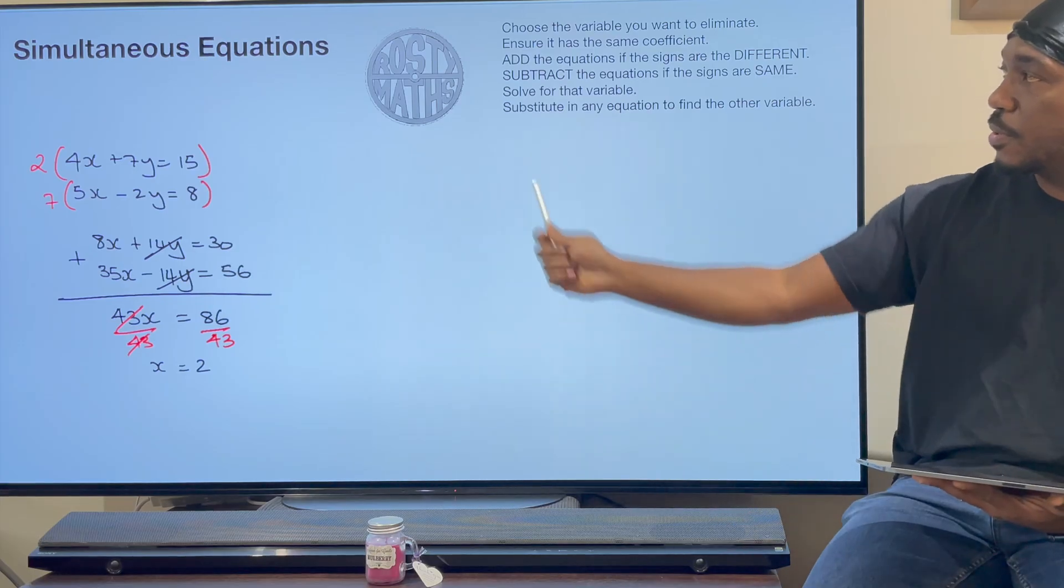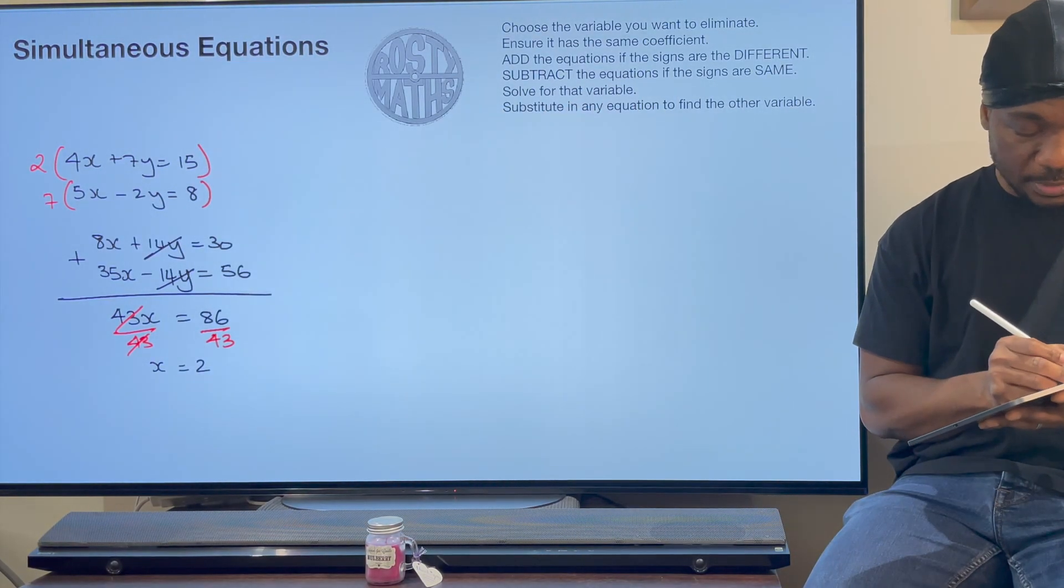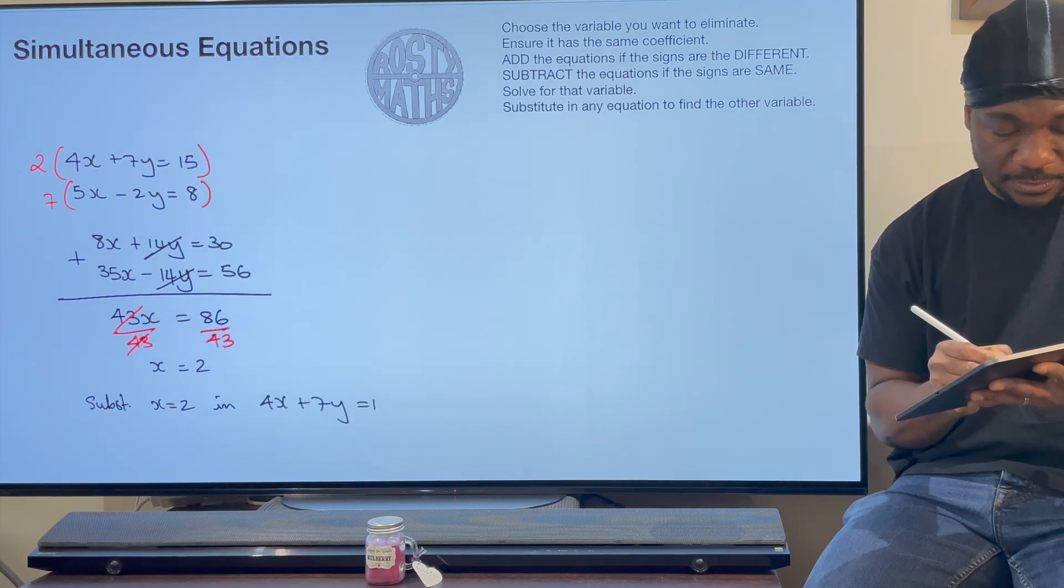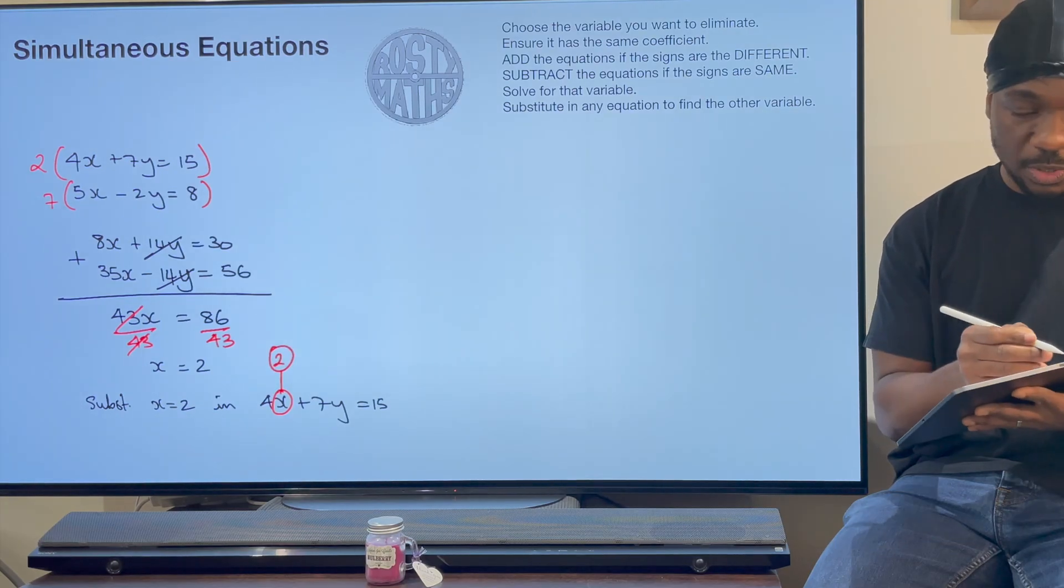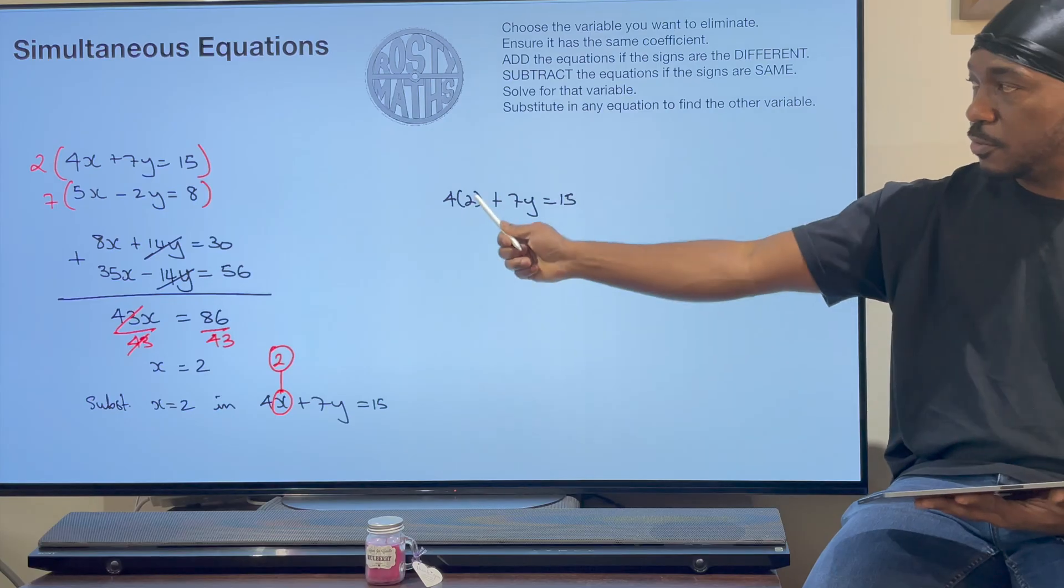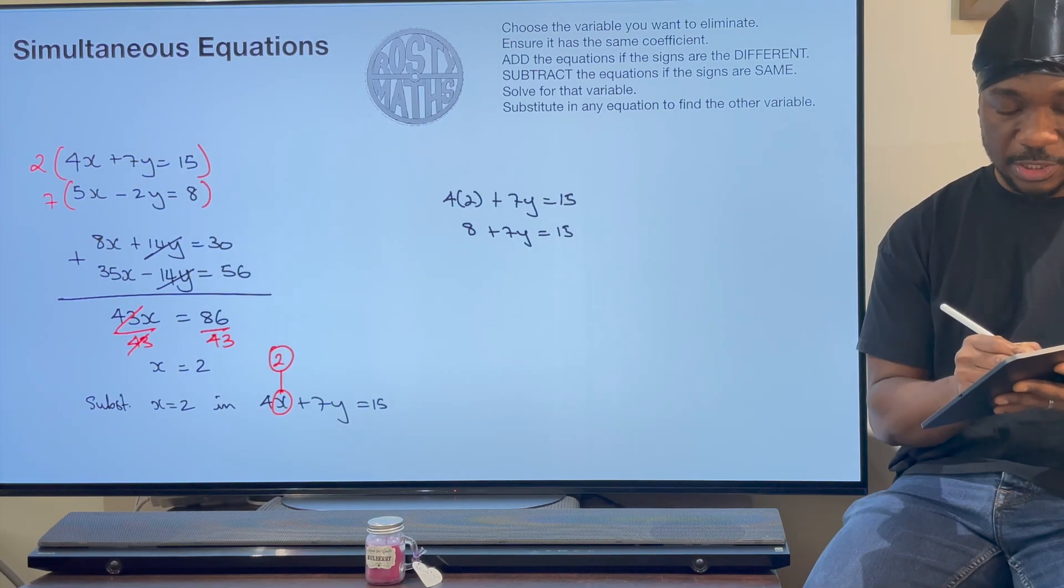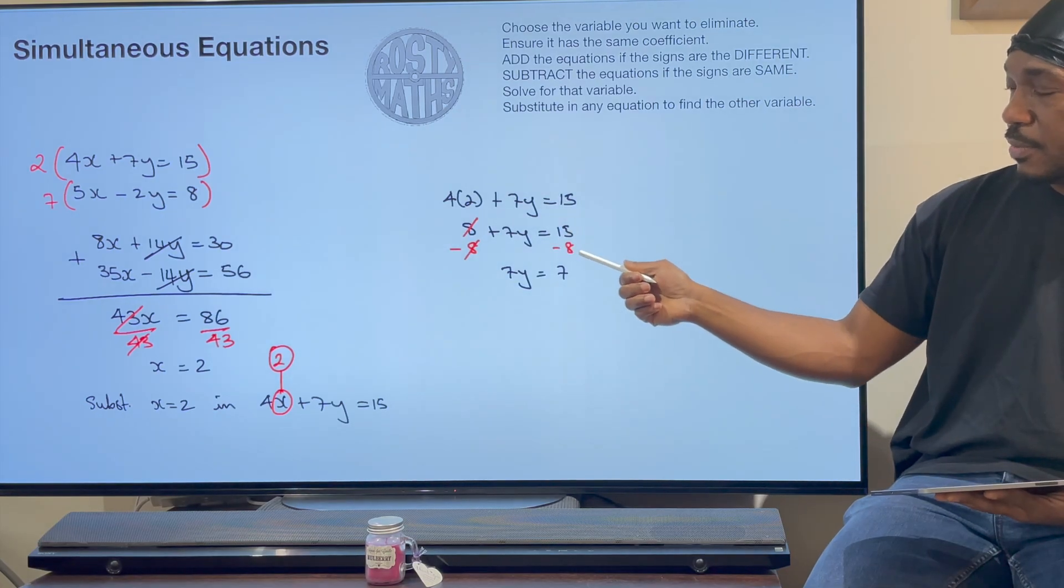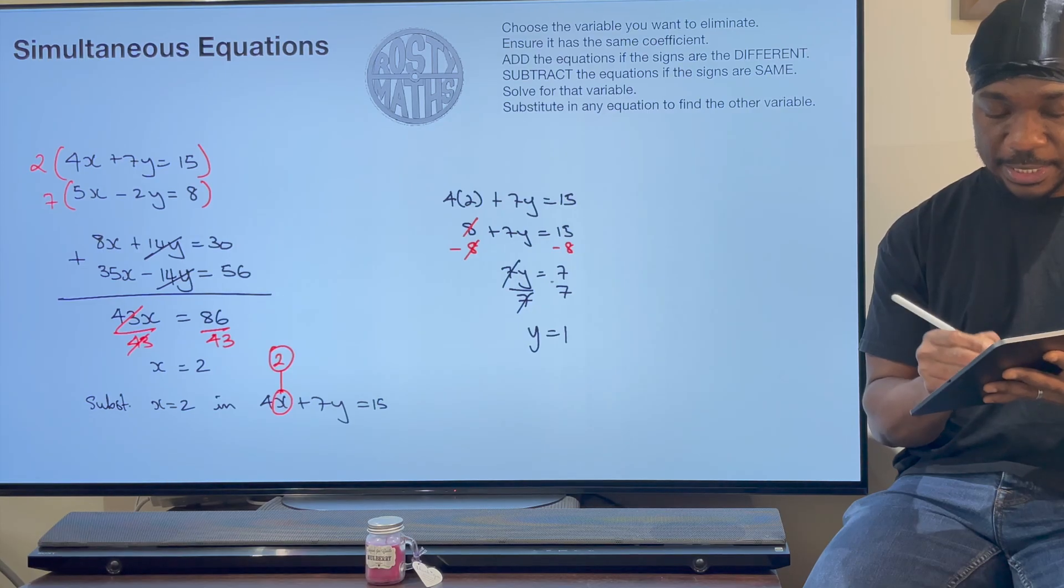Once I've got x equals 2, I need to substitute to find y. I've got loads to choose from. I will choose equation 1, the very top one. I'm going to substitute x equals 2 in 4x + 7y equals 15. I'm going to replace this x with the number 2. So we're going to have 4 times 2 plus 7y equals 15. 4 times 2 gives me 8 plus 7y equals 15. Now I'm going to use my inverse operation, take away 8 from both sides. 7y is going to be 7. I now divide both sides by 7. So y is equal to 1. This is finished. x is equal to 2 and y is equal to 1.